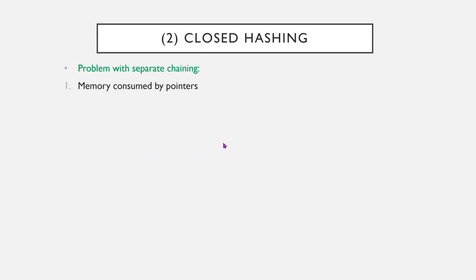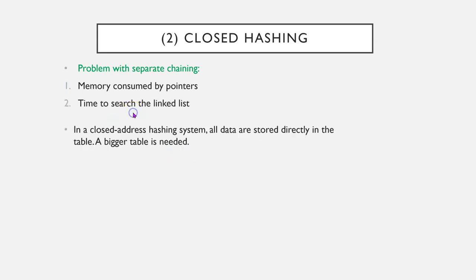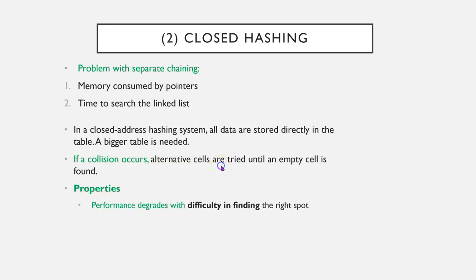There are some problems. Memory is consumed by pointers, not a big deal these days, but it also does take time to search linked lists. Now, in a closed address hashing system, all data are stored directly in a table. A bigger table can be needed. If a collision occurs, alternative cells are tried until an empty cell is found. So, performance degrades with the difficulty in finding the right spot.